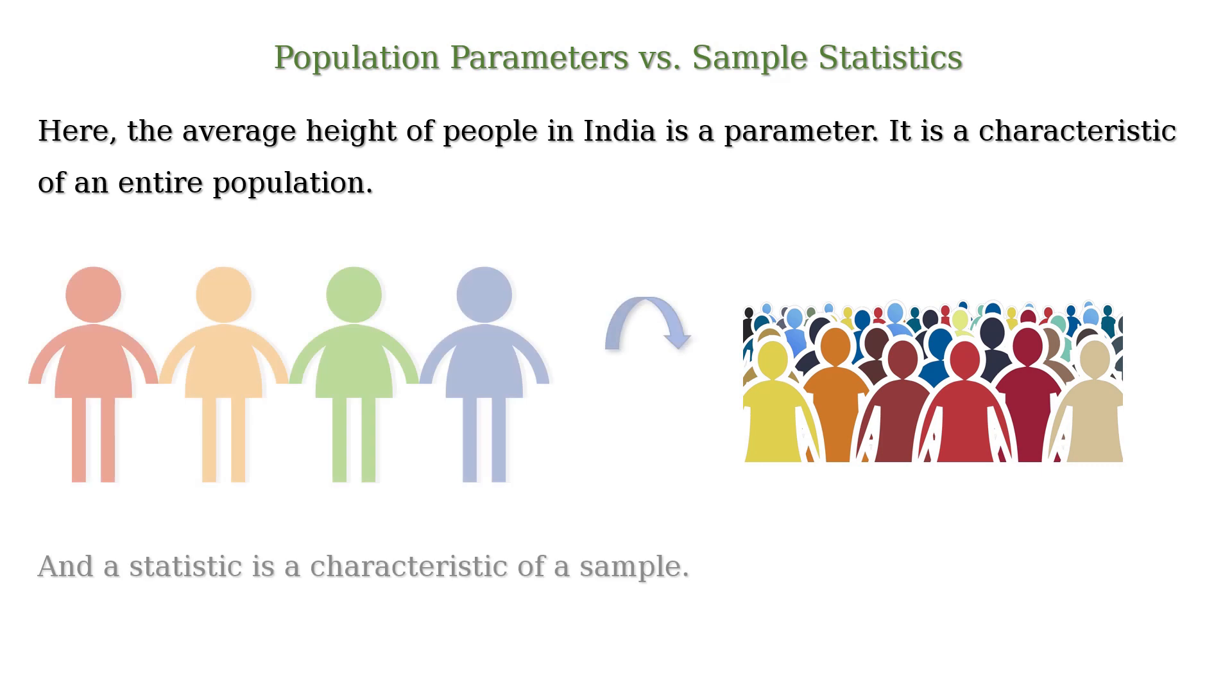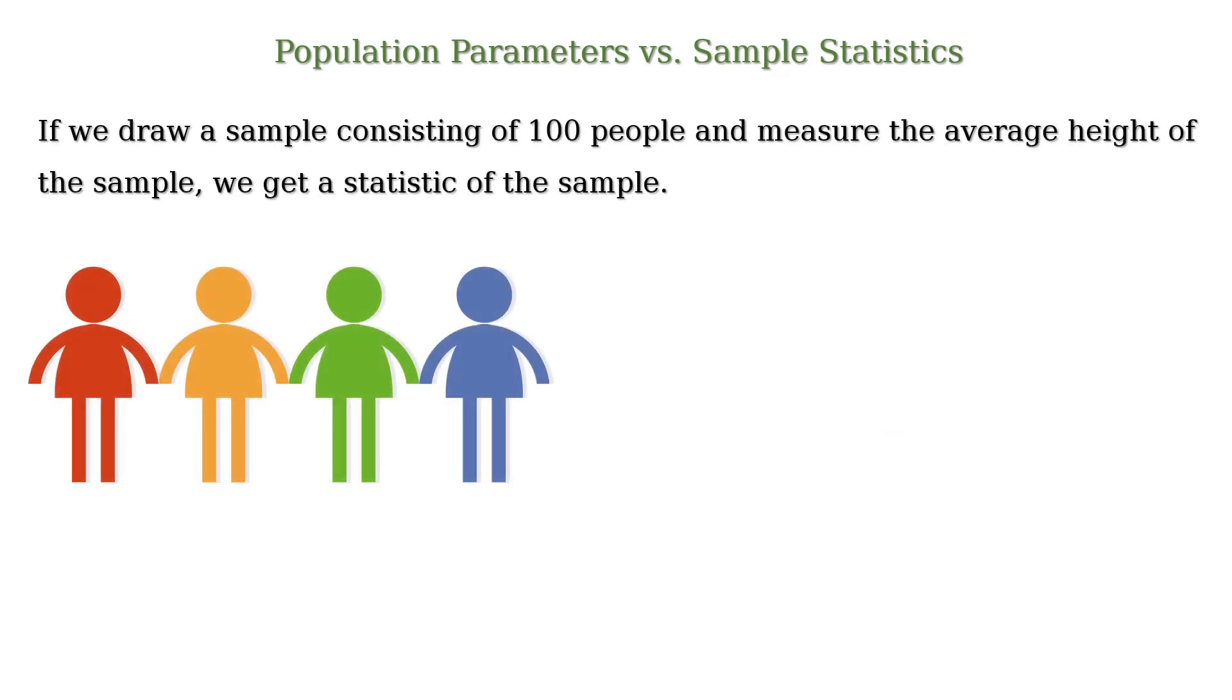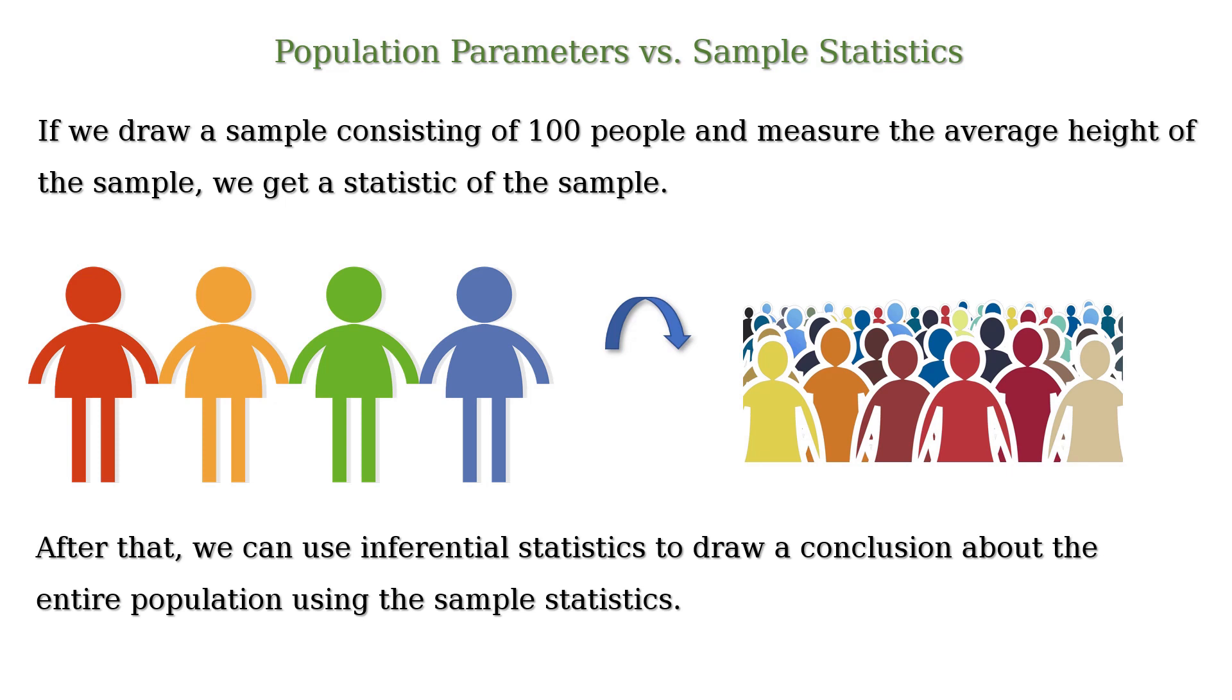Here the average height of people in India is a parameter. It is a characteristic of an entire population, and a statistic is a characteristic of a sample. If we draw a sample consisting of 100 people and measure the average height of the sample, we get a statistic of the sample. After that, we can use inferential statistics to draw a conclusion about the entire population using the sample statistics.